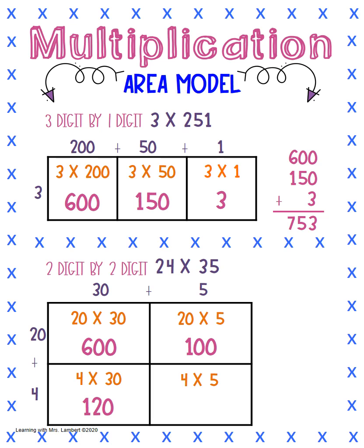Our last box, we have 4 times 5, which we know is 20. Now we're going to add all of these up. So we have 600, 100, 120, and 20. We're going to add them together, and we get 840.